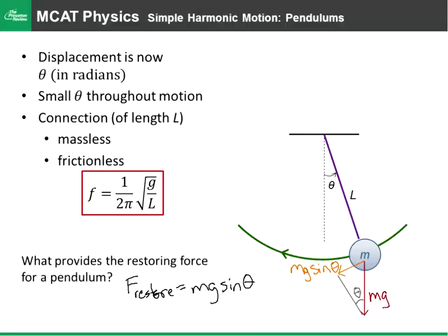And so this is why the small angle insistence or condition must obtain for simple harmonic motion on a pendulum. Because for small, small values, small angles.